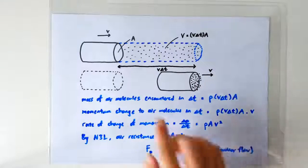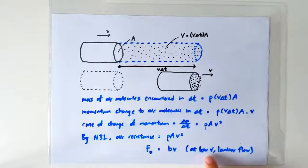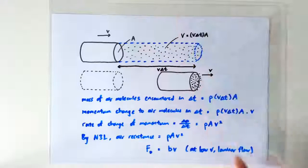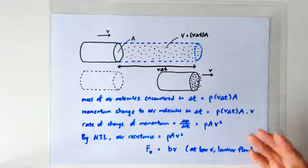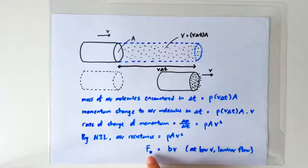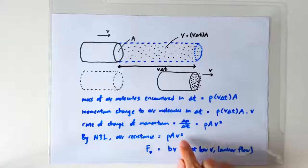In fact, if the cylinder is moving at a low enough speed such that the airflow is laminar, we usually formulate the air resistance as a force that's proportional to V rather than V squared.